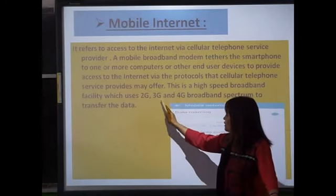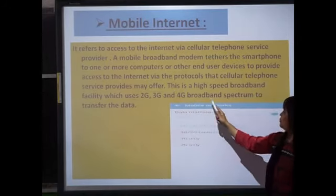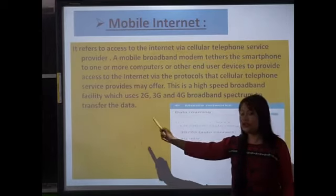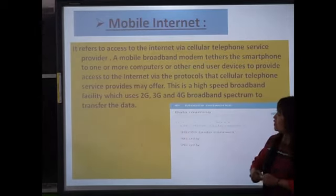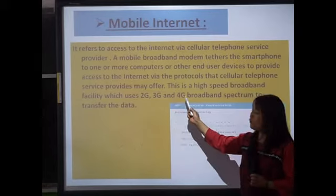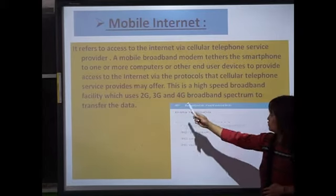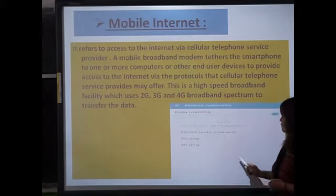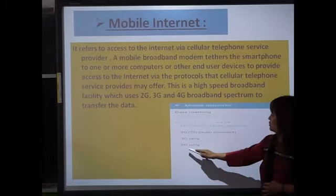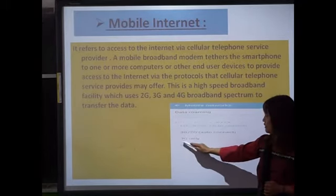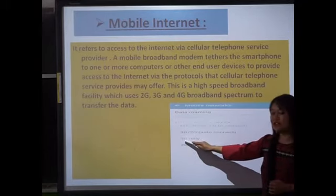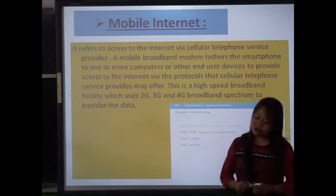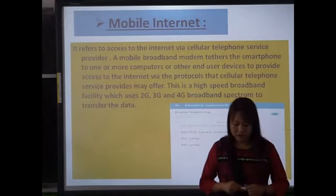Cellular telephone service providers may offer high-speed broadband facilities which use 2G, 3G, and 4G broadband spectrum to transfer data. 2G means second generation, 3G is third generation, and 4G is fourth generation — you can see exactly these figures on your mobile.